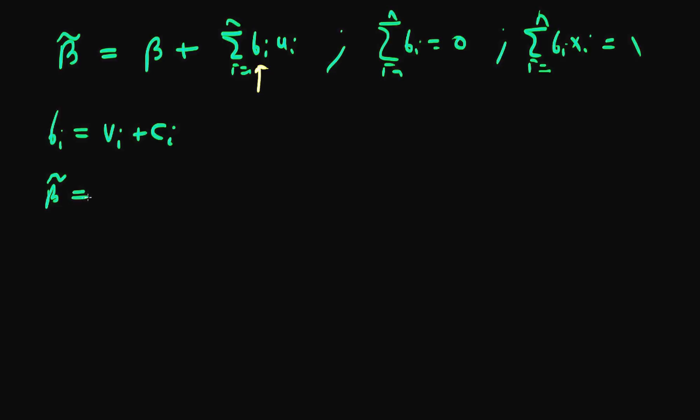So beta tilde is equal to beta plus the sum of vi plus ci times ui. Again, this sum is going from i equals 1 to n.